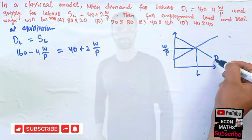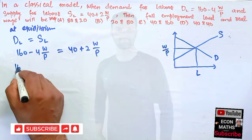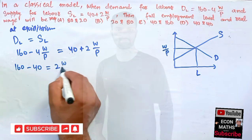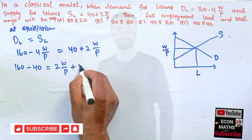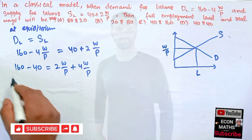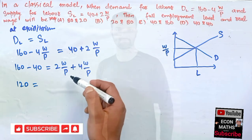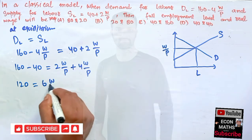When we equate these two things, this is demand and this is supply. Transposing, 160 - 40 = 2W/P. When transposing this term, it becomes positive 4W/P. Since these are like terms, we can add them. 160 - 40 = 120, which equals 2W/P + 4W/P = 6W/P.